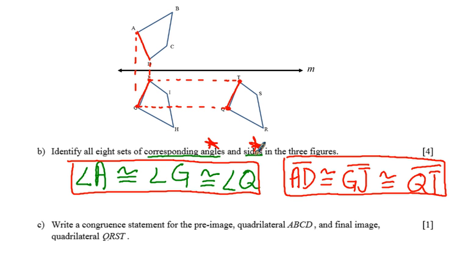Okay, let's move on to part C, which says to write a congruence statement for the preimage, which is ABCD. And I'll clean up my picture again for this.